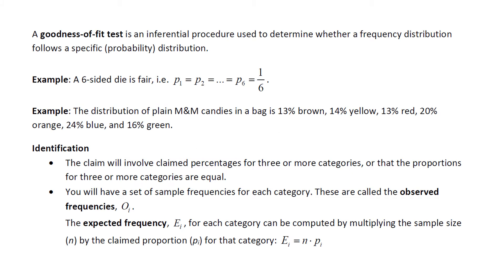The goodness of fit test is an inferential procedure used to determine whether a frequency distribution follows a specific probability distribution. For example, we could test that a six-sided die is fair. In other words, the proportion of ones, twos, threes, and so on are all equal to one-sixth.